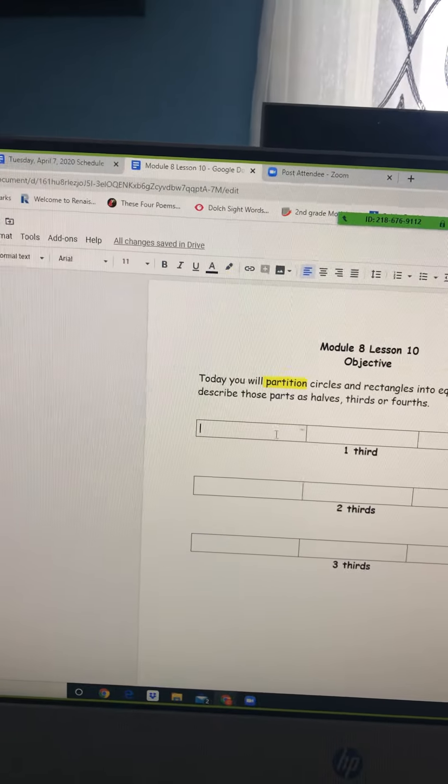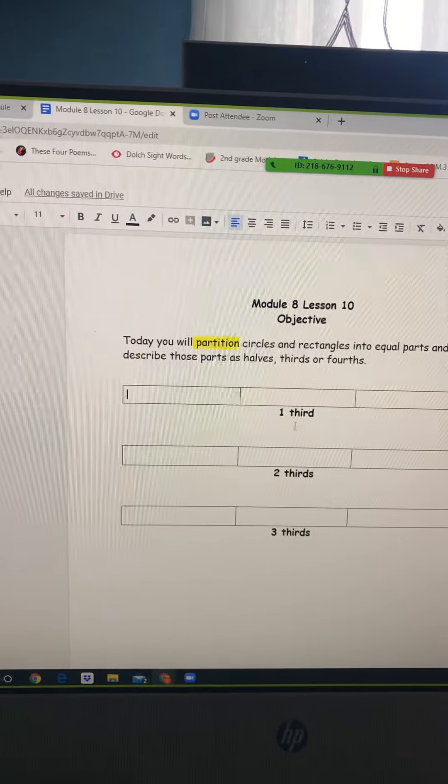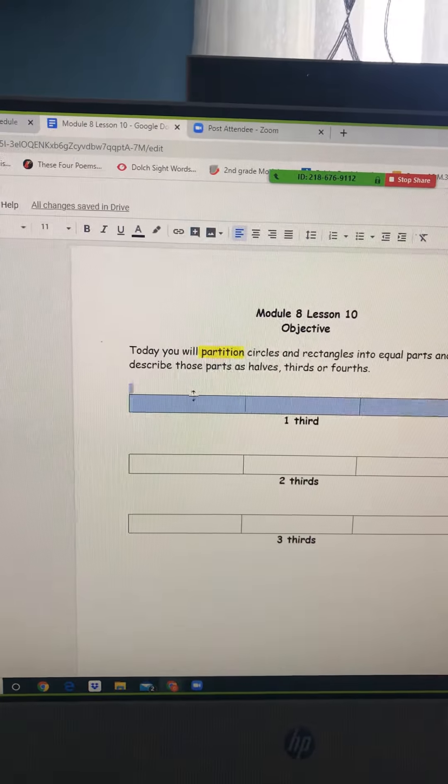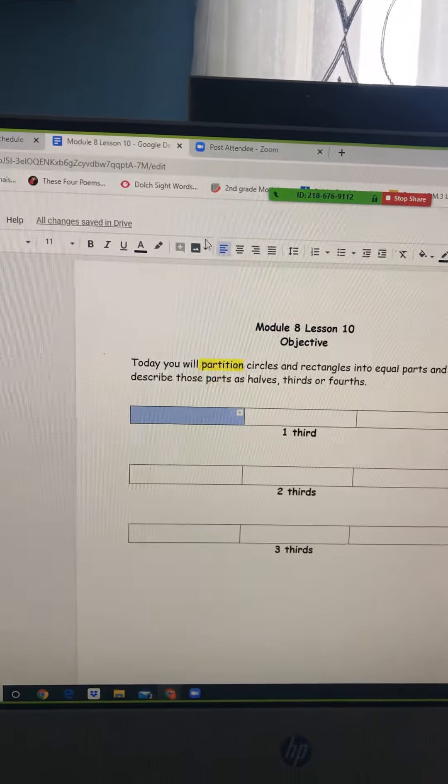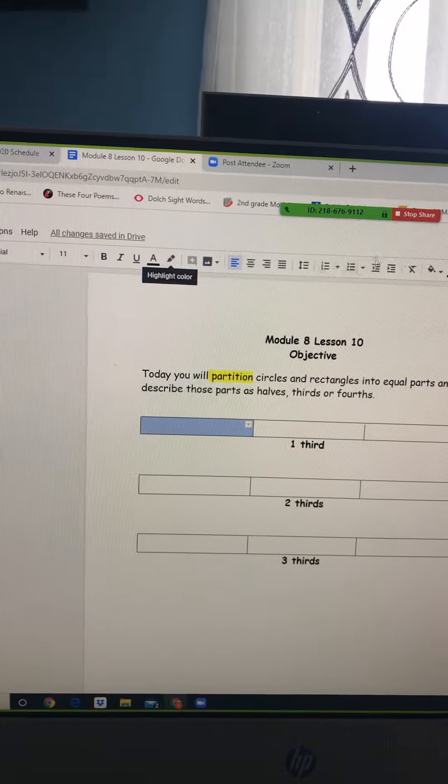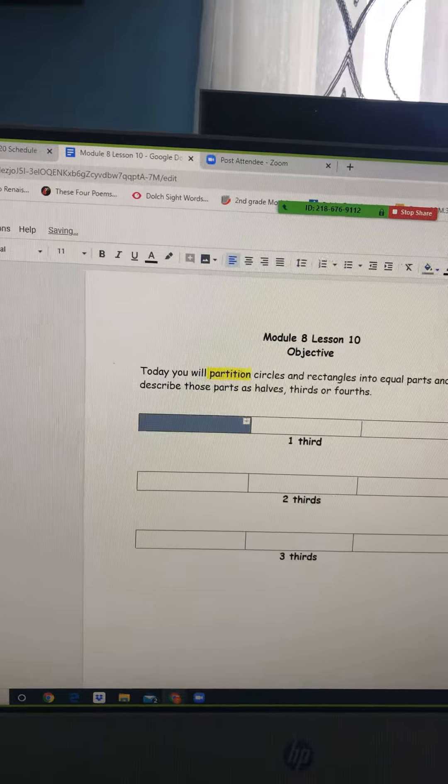So if this is my rectangle and I want to show one-third, what I'm going to do is take one of the equal pieces and I'm going to fill it in.